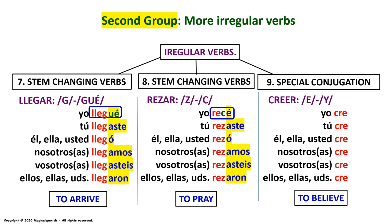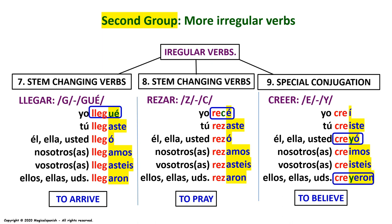Group number nine has a special conjugation. We are going to use CREER, meaning 'to believe.' Pay attention to the change of the letter E into a Y. In past tense: Yo creí. Tú creíste. Él, ella, usted creyó. Nosotros, nosotras creímos. Vosotros, vosotras creísteis. Ellos, ellas, ustedes creyeron. Let's look at the third person singular: él, ella, usted creyó — here we have a letter Y, a special change. And the same happens with the third person plural: ellos, ellas, ustedes creyeron. So we change the letter E into a Y.